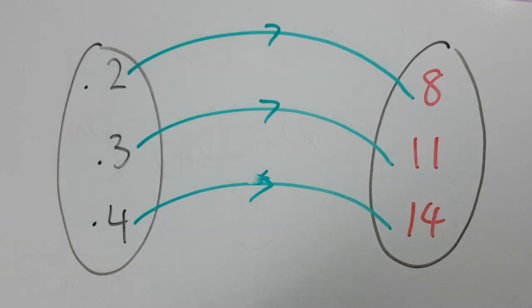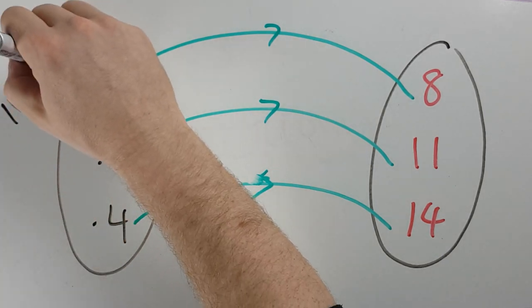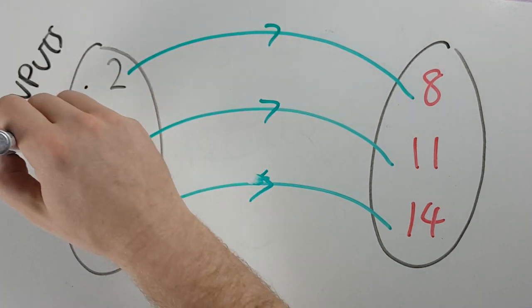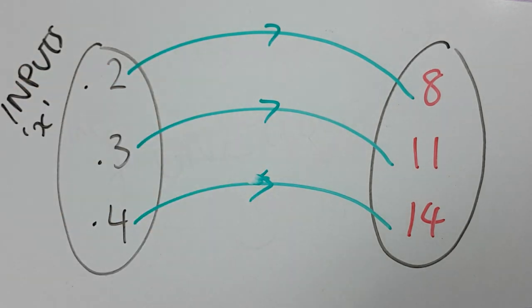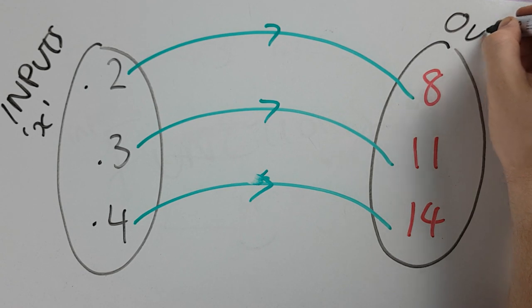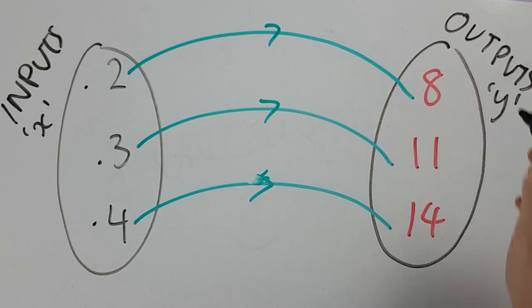Now, a little bit more terminology. This is our inputs. We refer to these generally as X. These are our outputs, and we refer to these guys as Y. With the same idea where we multiply a number by 3 and we add 2, what would you get if I were to pick the number 5? So you're going to input 5. What number would you get for your output?